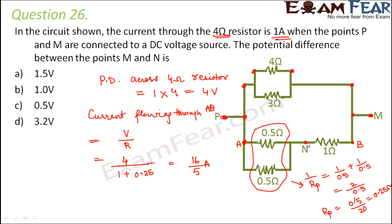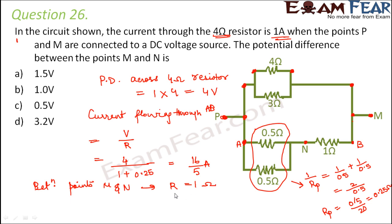Now we have to find the potential difference between points M and N. Between points M and N, the net resistance is 1 ohm — just one resistance. The current flowing between M and N is 16/5 amperes, because throughout the arm AB the current flowing is 16/5 amperes. Therefore V equals I into R, which is 16/5 into 1, which equals 3.2 volts. So 3.2 volts is the correct answer.